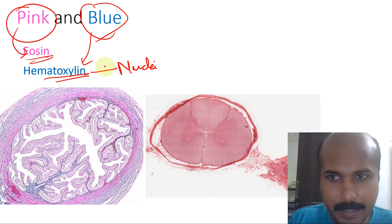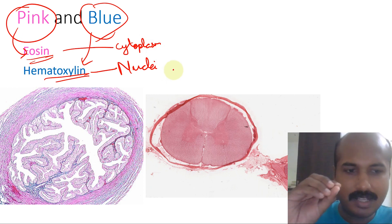Pink will be taken basically by the cytoplasm. This is the basic understanding you need to know. There are some small exceptions I'll come to later, but as a general rule you can learn that nuclei will be taking a blue stain or hematoxylin stain, and cytoplasm will be taking an eosin stain or pink stain.